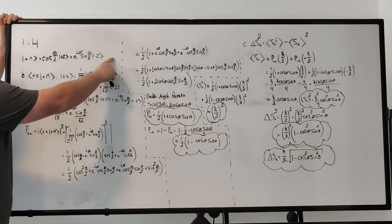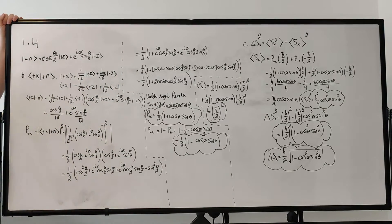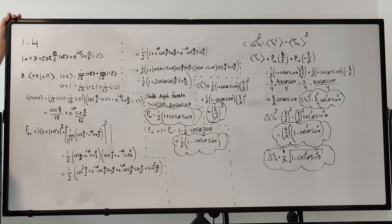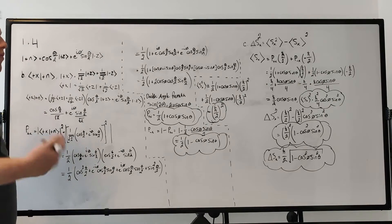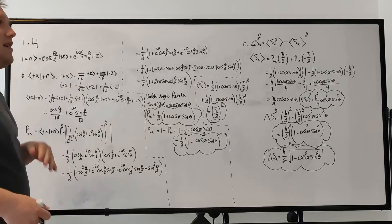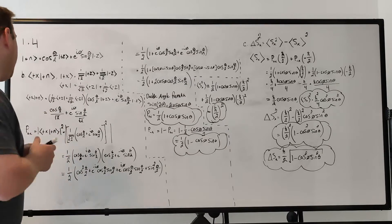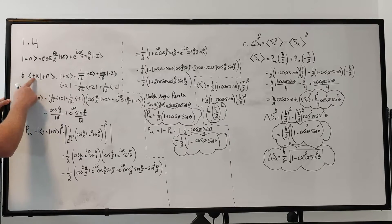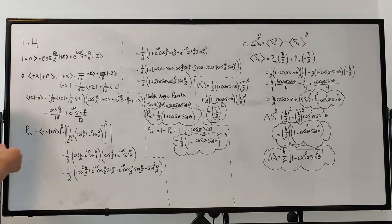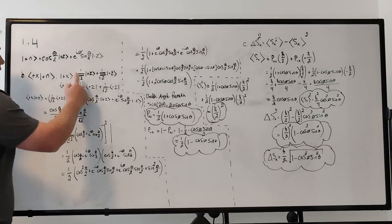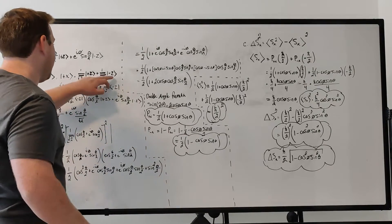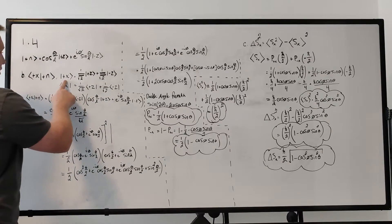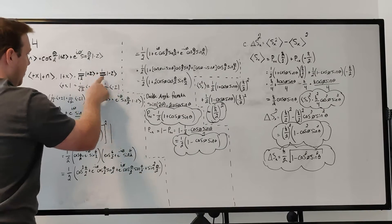We have our state that our particle's in. If we want to find the probability that we find this particle in the plus x state — corresponding to an x component of spin of h-bar over 2 — the plus x state can be written as a superposition of our basis states plus z and minus z, just like our state here is.